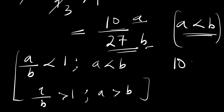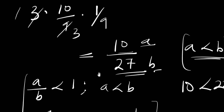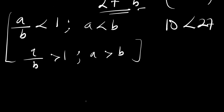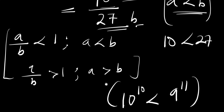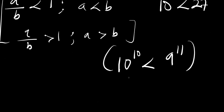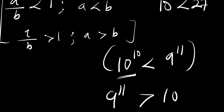So that means 10 is less than 27, and from here we can confirm that 10 raised to the power of 10 — which is our a — is less than 9 raised to the power of 11 — which is our b. So 10^10 is less than 9^11, or equivalently, 9^11 is greater than 10^10.